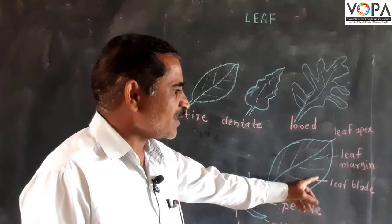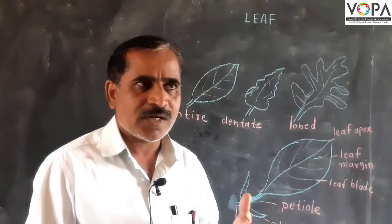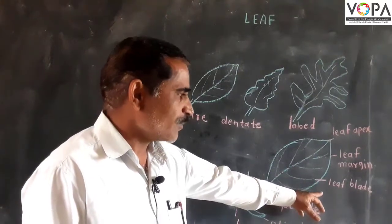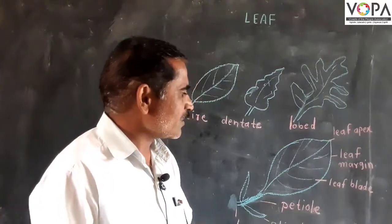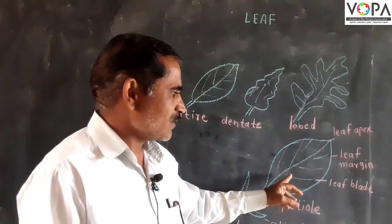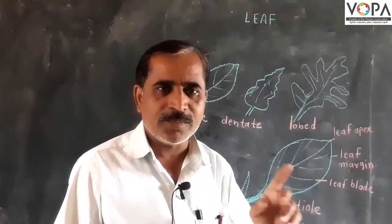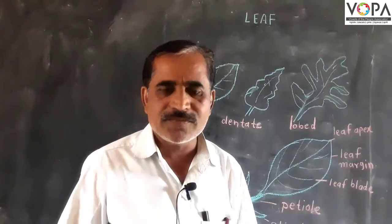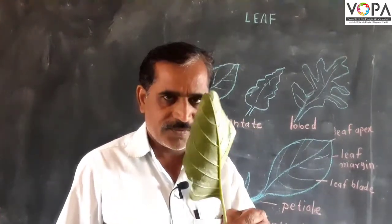The broad and spread-out part of the leaf is called the leaf blade. In some plants there is an undivided leaf blade with one single margin — this type of leaf is called a simple leaf.